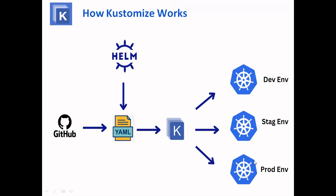The kustomization.yml file is very useful for managing those different environment requirements. With the help of continuous integration and the Helm tool, you can also manage YAML with customization via a GitHub repository. Helm is used for integration, and together with GitHub and Kubernetes customization, we can implement continuous delivery, which is used extensively in DevOps.